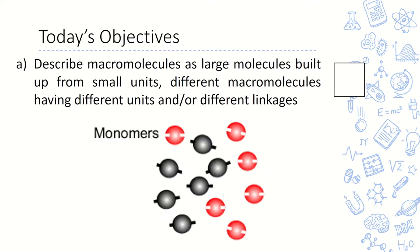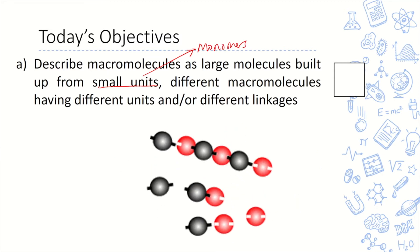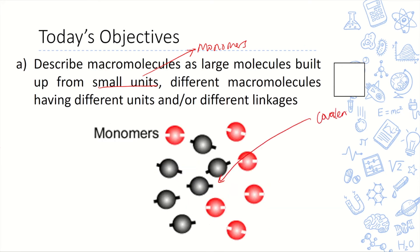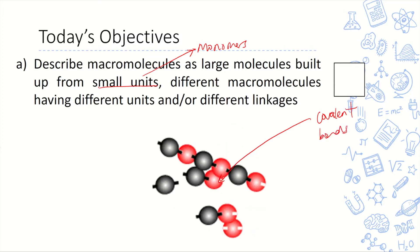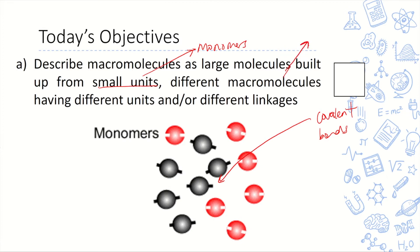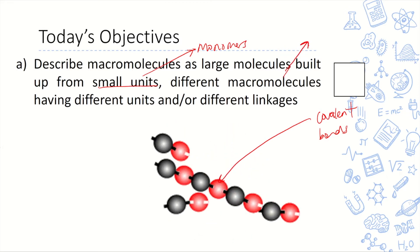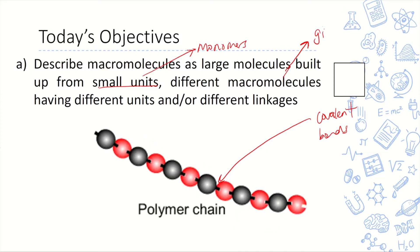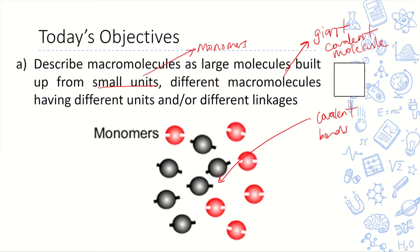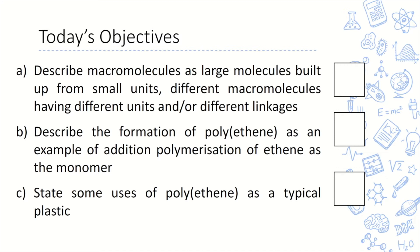Looking at this diagram, many monomers are joined by covalent bonds to form a large, long chain polymer. Macromolecules are made of covalent bonds between non-metal elements — they are giant covalent molecules.